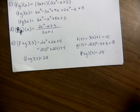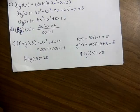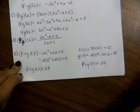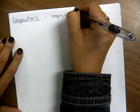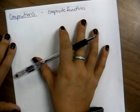Combinations are pretty easy — you add, subtract, multiply, or divide two expressions. The next piece is a little bit more difficult. Now we're going to talk about compositions, also referred to as composite functions.